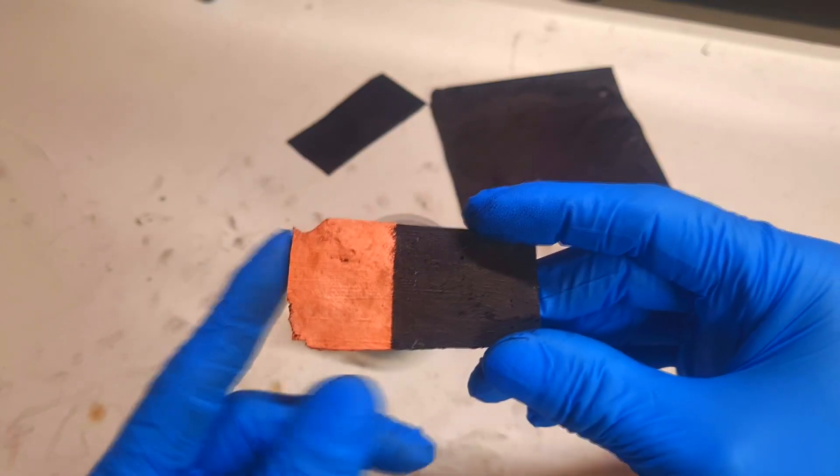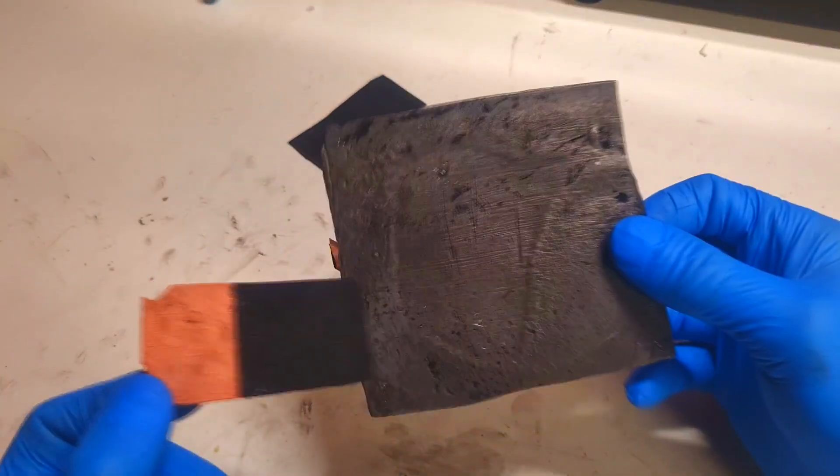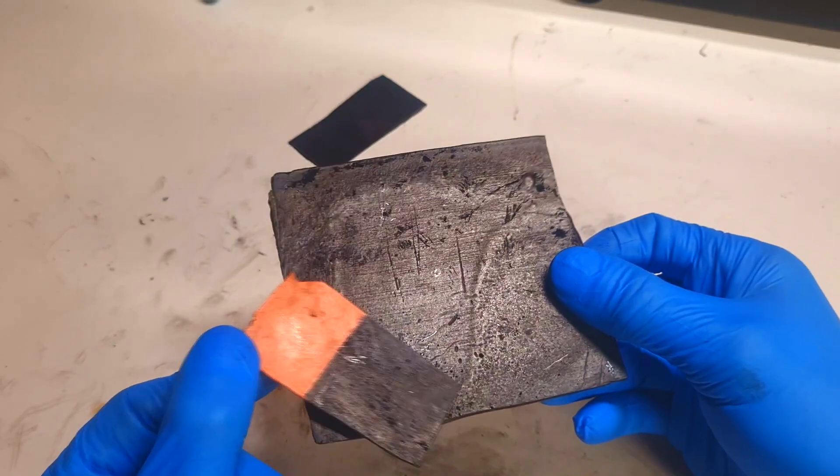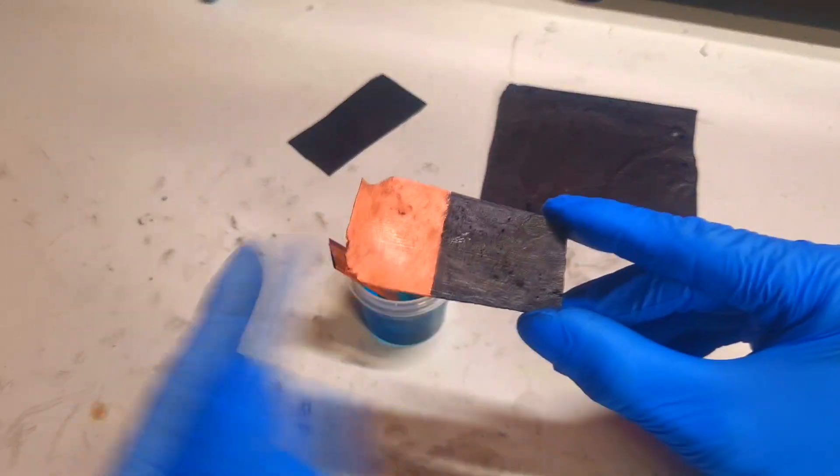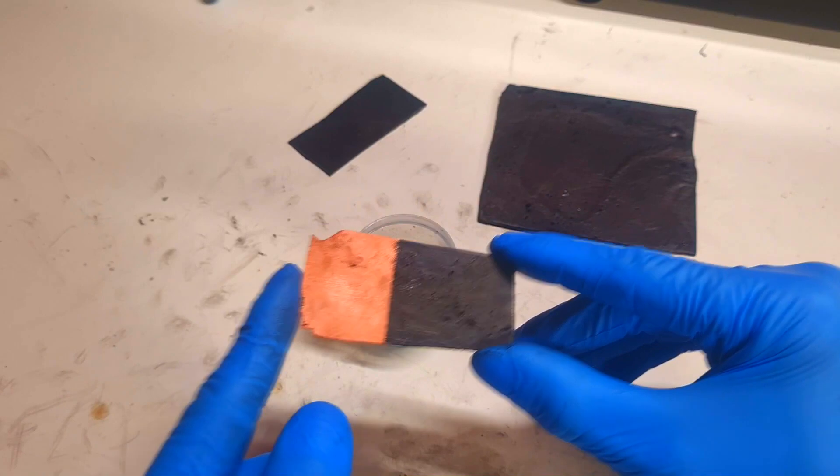So actually you can electroplate this kind of plastic really easily with copper, nickel, or even zinc.